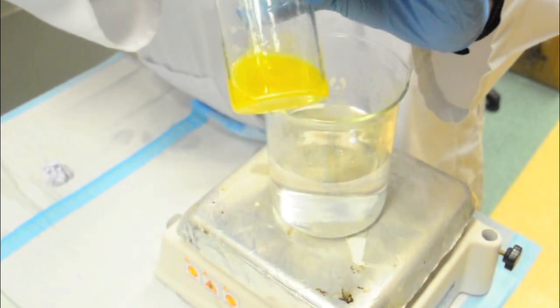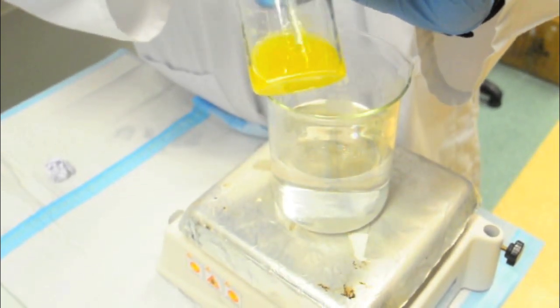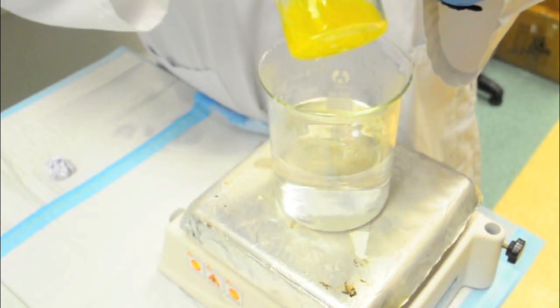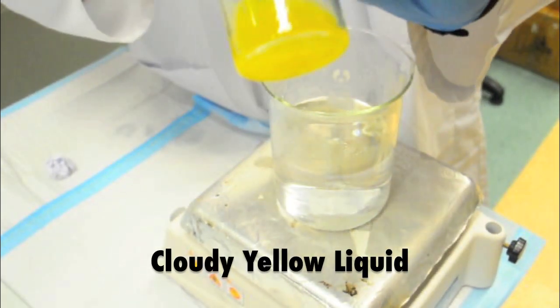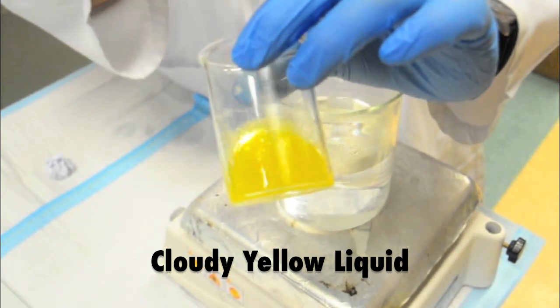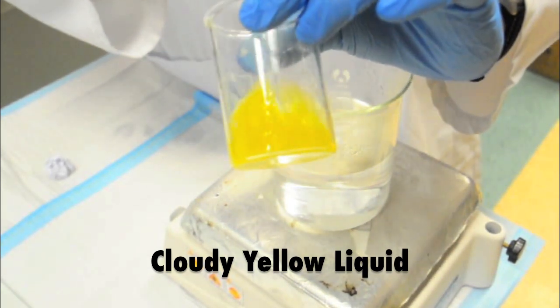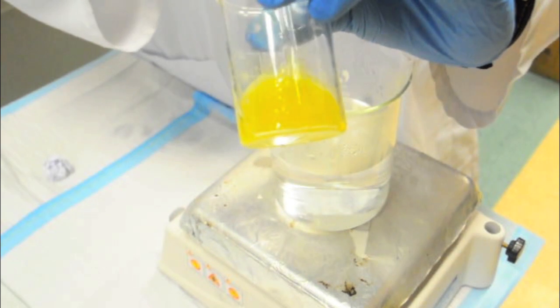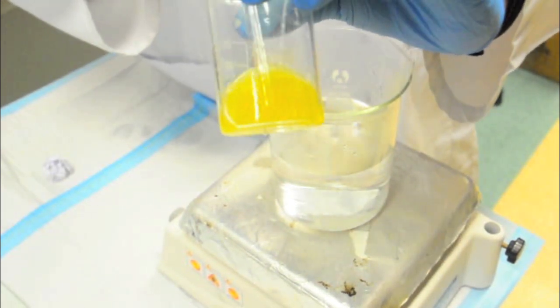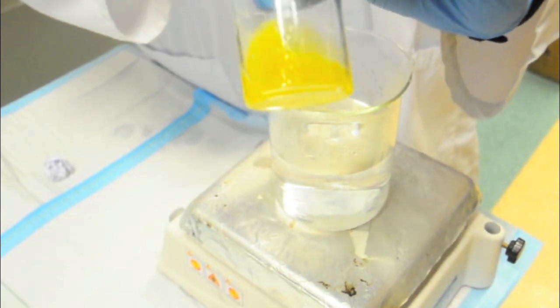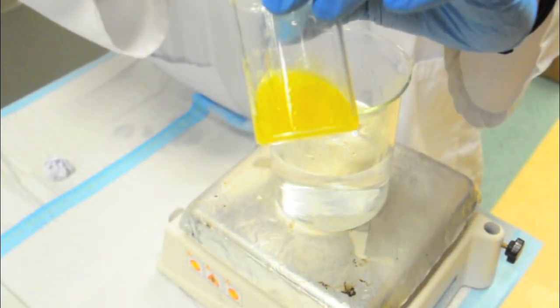So, the endpoint of it is when the theobroma oil is still liquid but it's quite cloudy as you can see. It's a translucent kind of a liquid. And do not heat it to the point where it becomes transparent, golden, like your cooking oil kind of appearance. That is a sign that your theobroma oil has overheated.